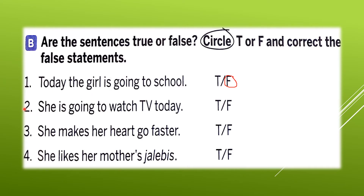Number two: She is going to watch TV today. No, because there is no electricity, she is not going to watch TV. So our answer is again false. Circle F. The correct answer will be: She is not going to watch TV today.